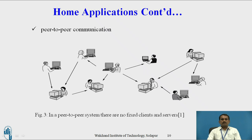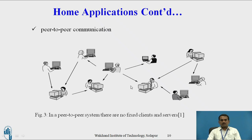Home Applications: This involves peer-to-peer communication. In a peer-to-peer system, there are no fixed clients and servers. The client and server may sit anywhere, and they can easily access data. If one user wants to access data from another user, they can send and receive data using this concept. This block diagram indicates peer-to-peer communication: one user sends a request to another user, who forwards it to the next user. This is peer-to-peer — one-to-one communication happening in this diagram.